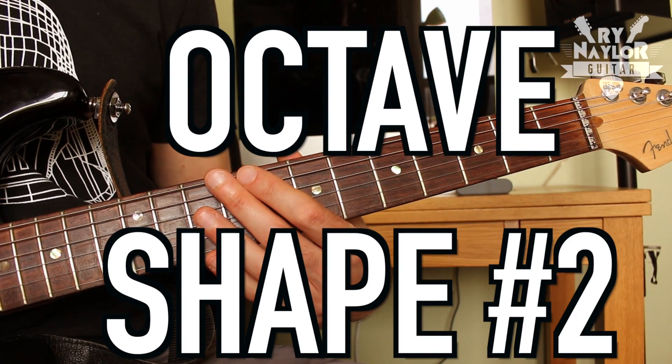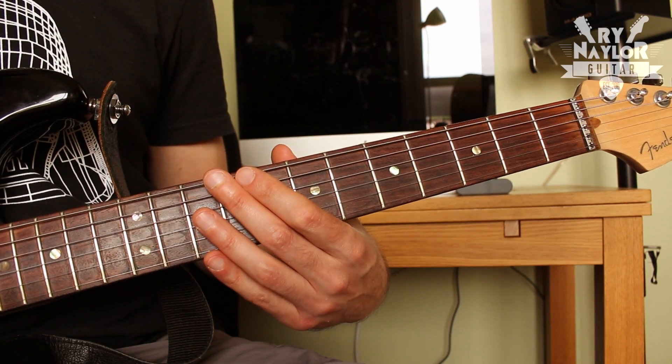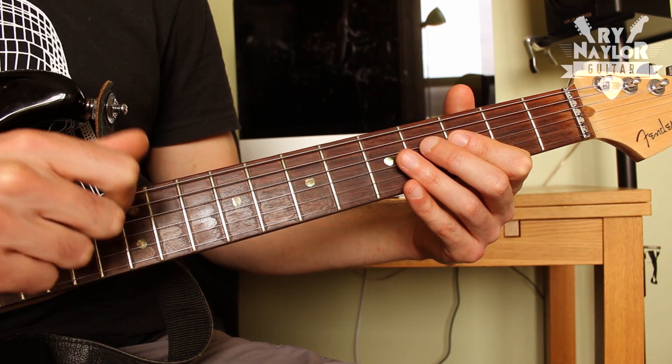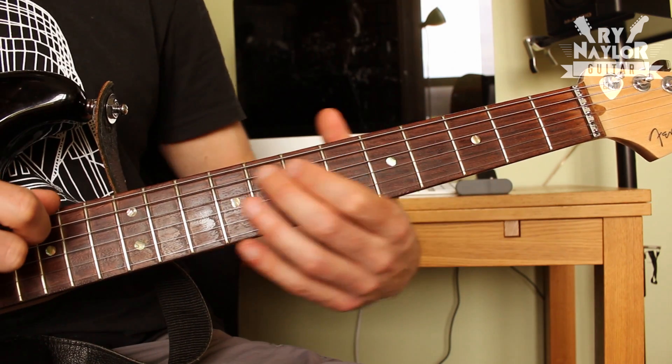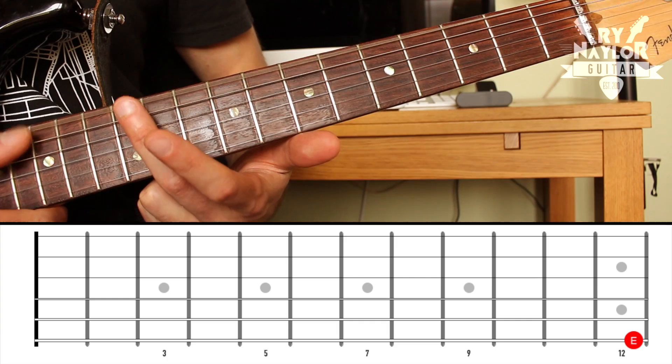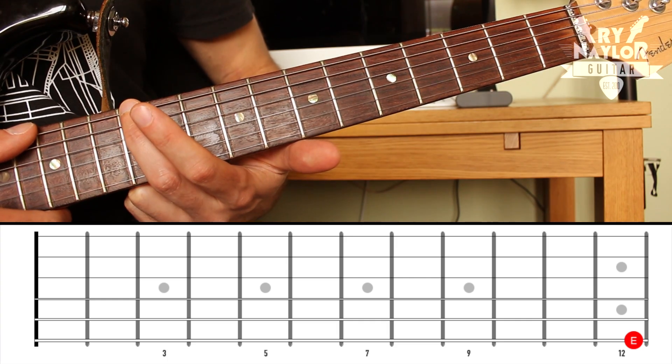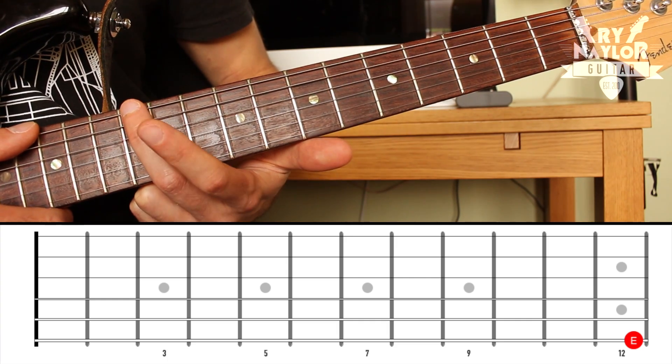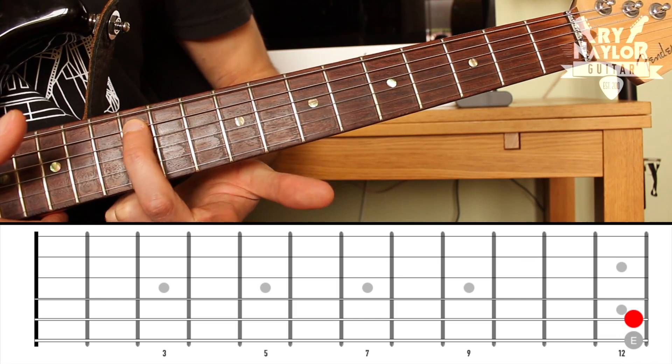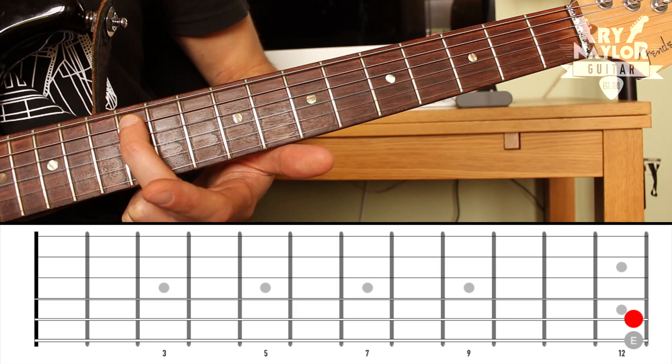Octave shape number two. Adjacent string. So strings that are next to each other, taking the E and the A strings. At this point, I should introduce a concept to you. Finding the same note on a lower string. If I take that E at fret 12 of my low E string, if I want to find that E on the A string, straight away I'm going to drop it down one string. So I'm now on the A string at the 12th.